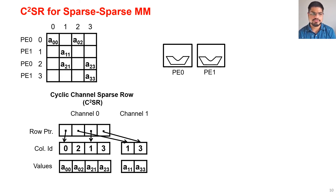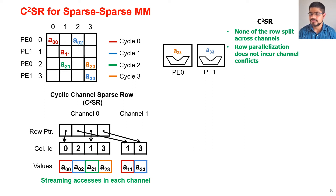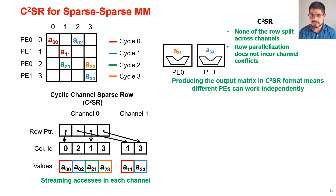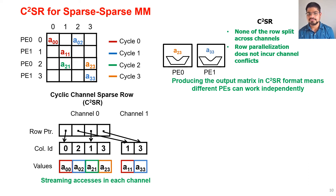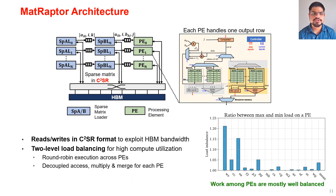When streaming non-zero values to a set of two PEs in C²SR, the memory accesses are contiguous within each channel across all cycles. In C²SR, no row is split across channels, so row parallelization does not incur any channel conflicts. Producing the output matrix in C²SR format also means different PEs can work independently and produce their output independently, solving the challenge of not knowing the number of non-zeros in the output matrix ahead of time. With two, four, and eight PEs, C²SR achieves really high bandwidth utilization compared to CSR, approaching peak memory bandwidth.